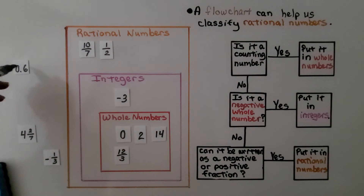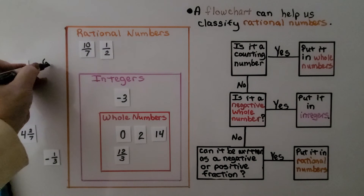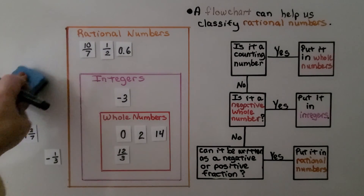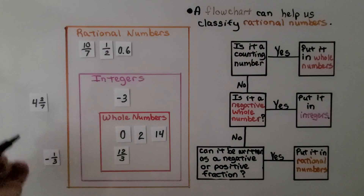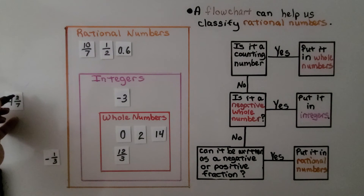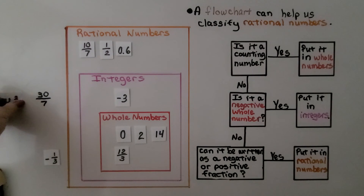What about 0.6? That's not a counting number — it's a decimal. Is it a negative whole number? No. Can it be written as a fraction? Yes, that's six tenths, so it is a rational number. And for the mixed number: can it be written as a fraction? Yes — four times seven is twenty-eight, add the numerator two to get twenty-nine, over the denominator thirty. So that is a rational number.